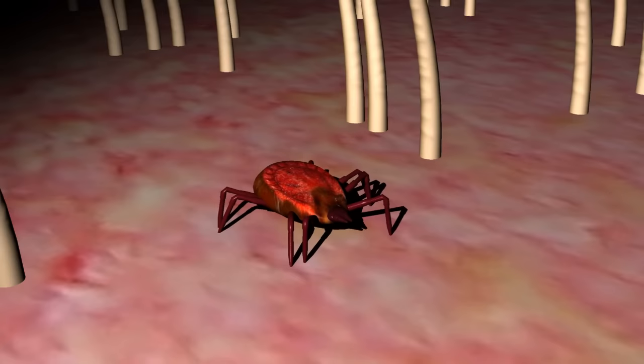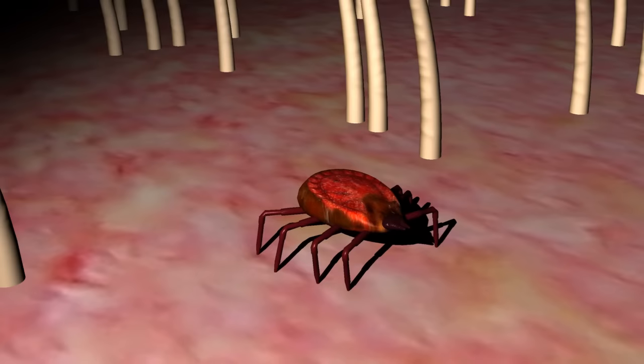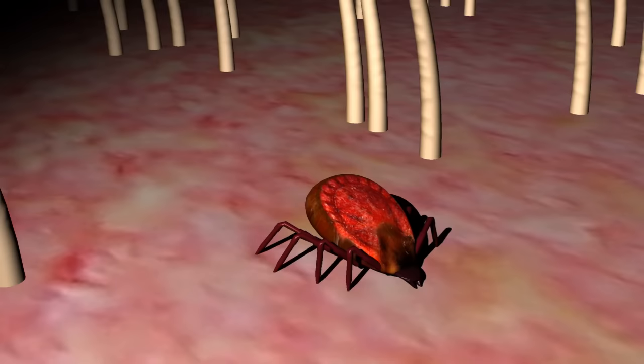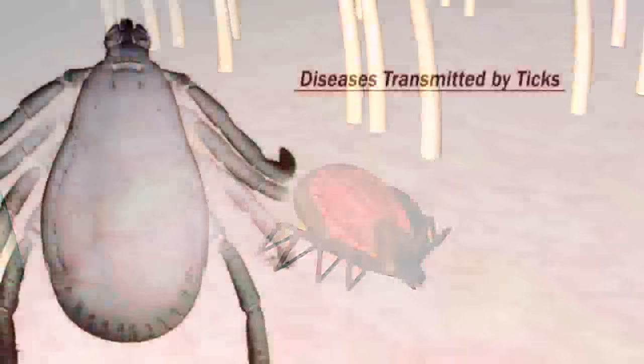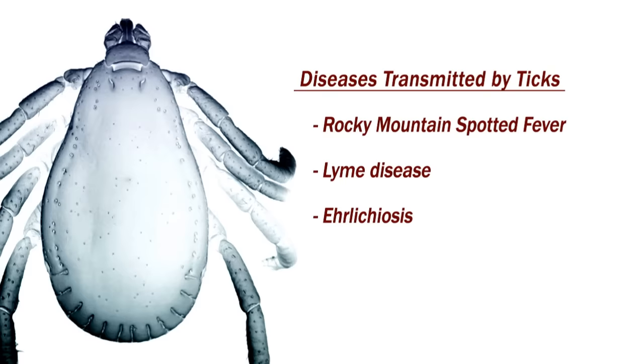Like fleas, ticks are blood-sucking parasites. They attach themselves to their host and remain attached for an extended period of time, often several days. During this time, the tick will become engorged with blood. This extended feeding period makes the tick an ideal carrier for various blood-borne diseases. Common diseases transmitted by ticks include Rocky Mountain spotted fever, Lyme disease, and ehrlichiosis.